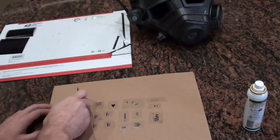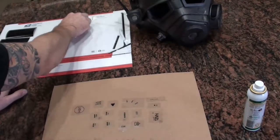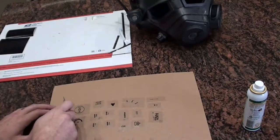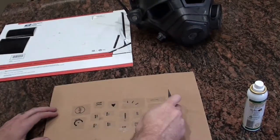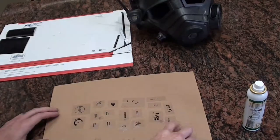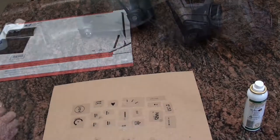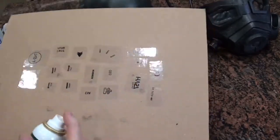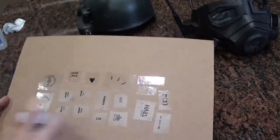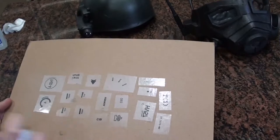After we get all of the transfer decals onto the cardboard, we're just going to use the spray adhesive and put a light coat over all of the graphics, all the decals. And you'll see it fog up here as I spray it. You don't need a lot of the spray adhesive.